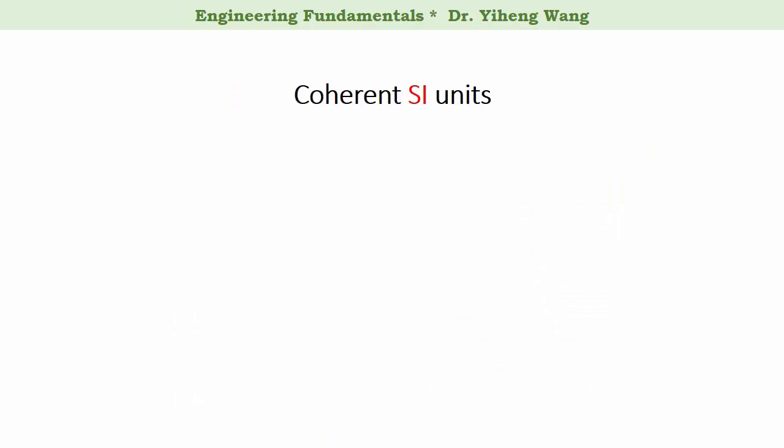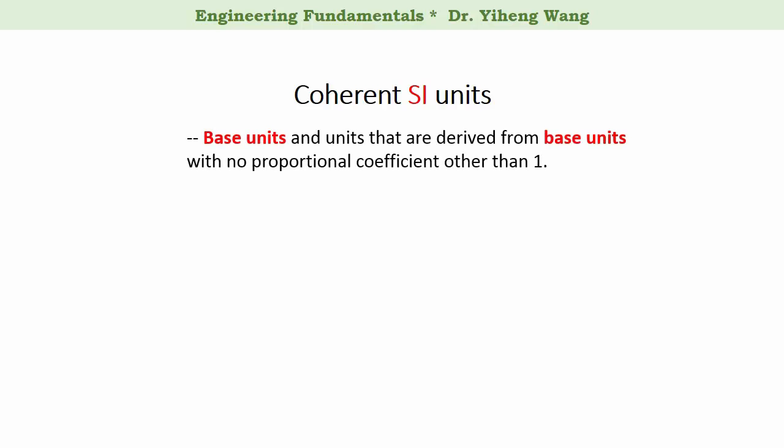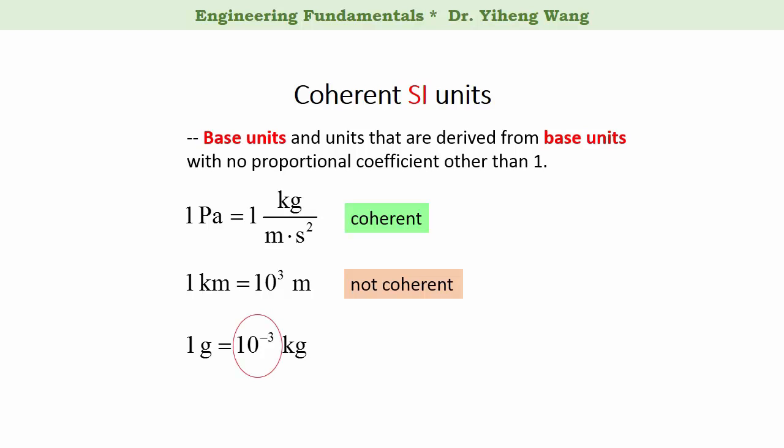Now we have looked at all the different types of SI units, I want to introduce a very useful concept, the coherent unit, which includes all the base units as well as units that are derived from base units with no proportional coefficient other than one. For example, one Pascal equals to one kilogram per meter second squared. As you can see, the coefficient here is one. Therefore, Pascal is a coherent unit. One kilometer is 1000 meters. The coefficient here is not one. Therefore, kilometer is not coherent. Similarly, one gram equals to one over 1000 kg. Again, the coefficient is not one. Therefore, gram is not coherent.